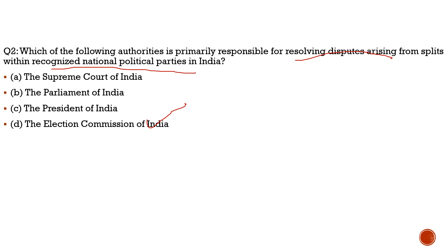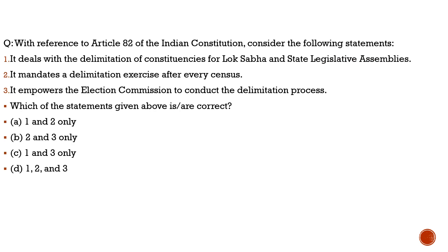Moving to question three: with reference to Article 82 of the Indian Constitution, consider the following statements. This is about delimitation of constituencies, prompted by a newspaper article — probably written by a DMK spokesperson from Tamil Nadu — discussing issues related to delimitation.